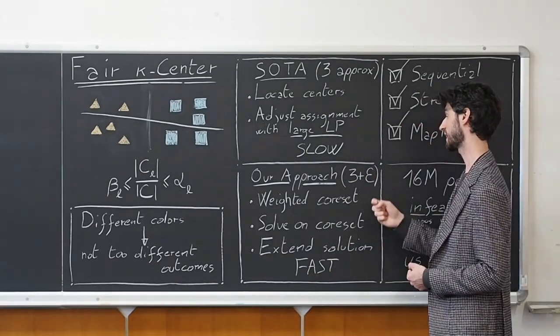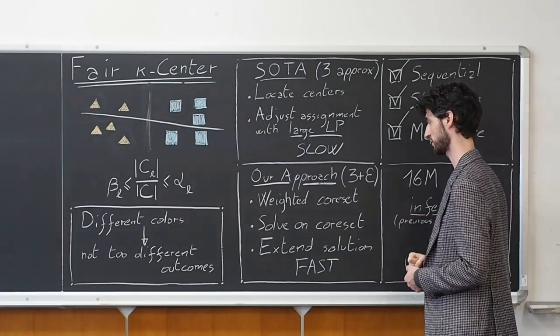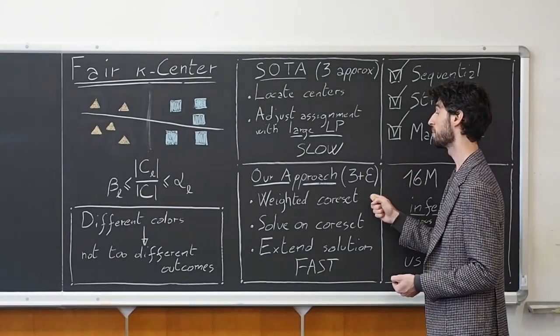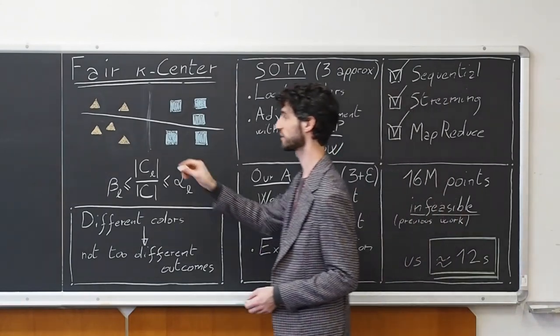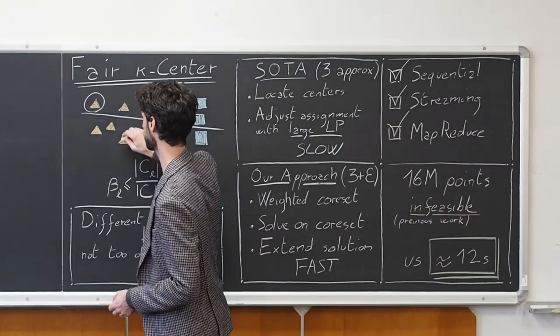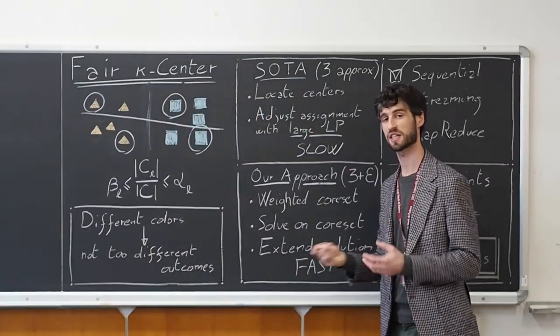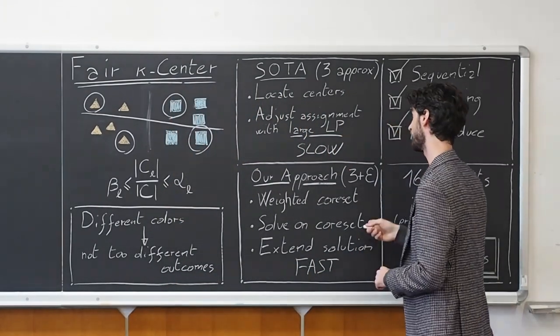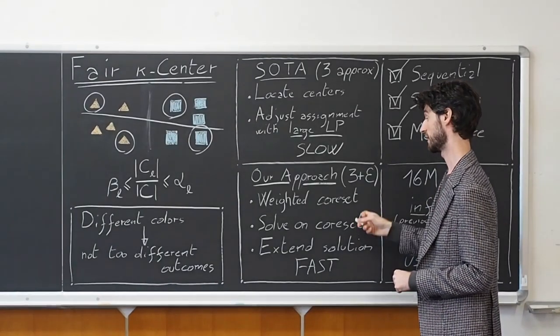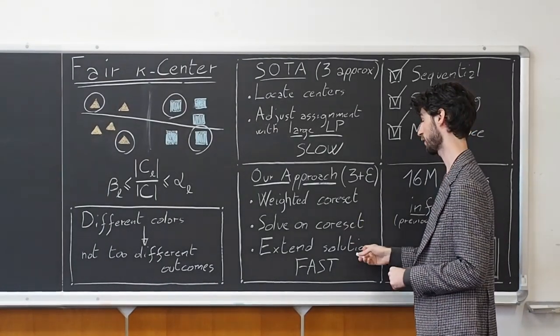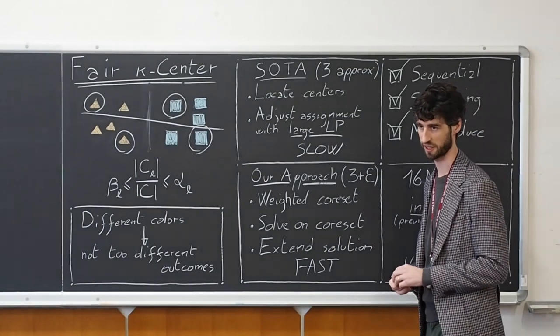Our approach instead gives a similar approximation factor, 3 plus epsilon, but first locates a weighted coreset, a subset of the points, with the property that they represent the input set very well. That is, we solve the problem just from the coreset before extending the solution to the entire input.